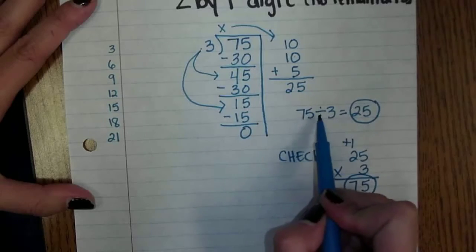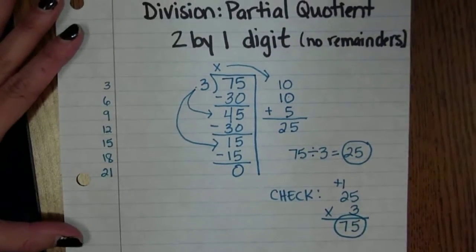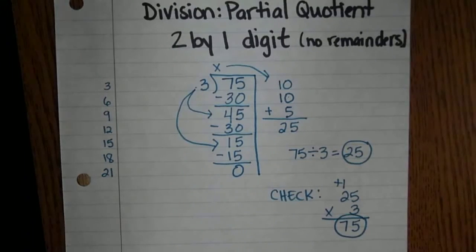So my answer, my quotient to 75 divided by 3 is going to be 25. Once again that is our partial product 2 by 1 with no remainders.